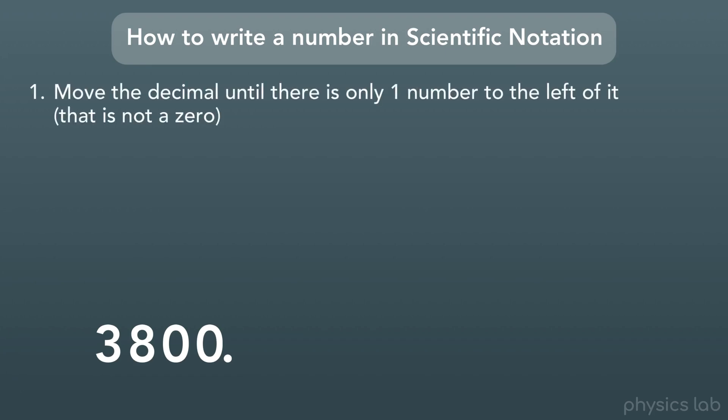First, we're going to move the decimal point until there's only one number to the left of the decimal. We'll move it to the left one digit, two digits, three digits, and we're done. There's only one number to the left of it.